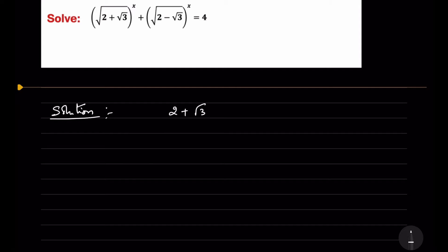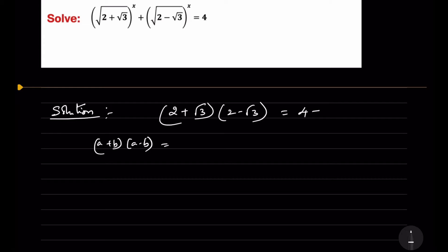Just consider (√(2+√3)) · (√(2-√3)). It is in the form (a+b)(a-b), which equals a² - b². So this can be written as √(4 - (√3)²) = √(4 - 3) = √1 = 1.